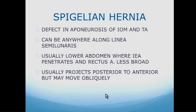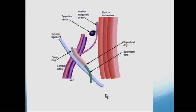A Spigelian hernia is a defect in the aponeurosis of the internal oblique muscle and the transversus abdominis muscle. It can be anywhere along the linea semilunaris, but is usually in the lower abdomen where the inferior epigastric artery penetrates and the rectus abdominis muscle is less broad. It projects posterior to anterior but may also move obliquely. The imaging shows a typical location for a Spigelian hernia.